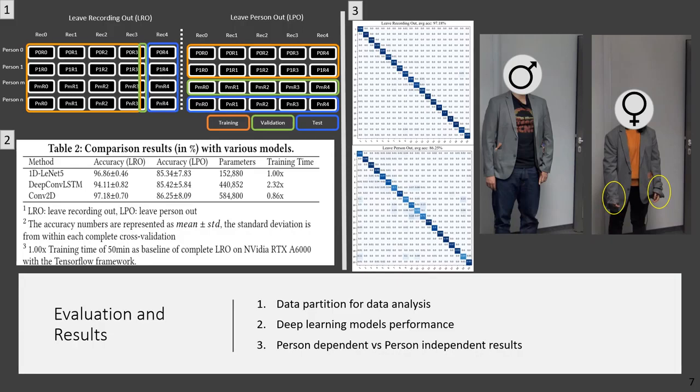Hence, our model works well for newly collected data from different people. The accuracy was similar between the deep learning models showing the strong pattern distinction in our signals. The first method, one-dimensional neural model, gives the best trade-off between its performance parameters and training time as shown in the table.